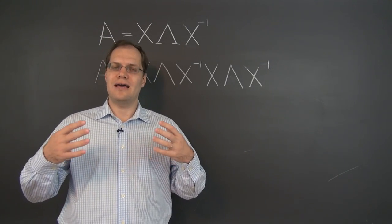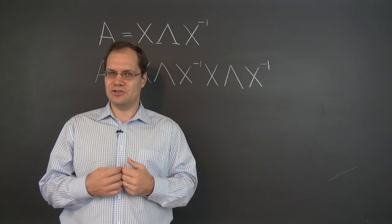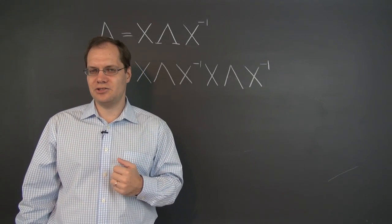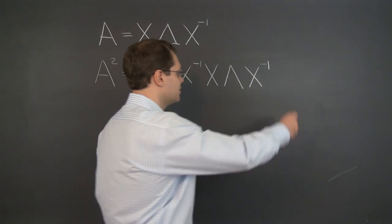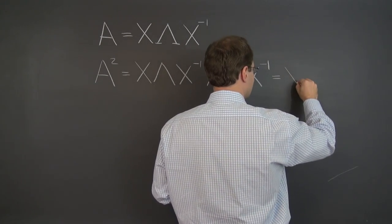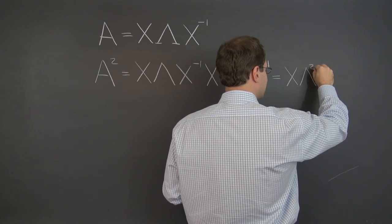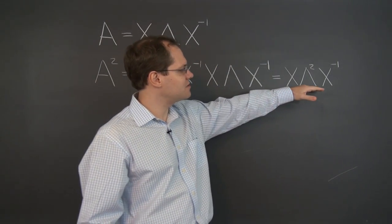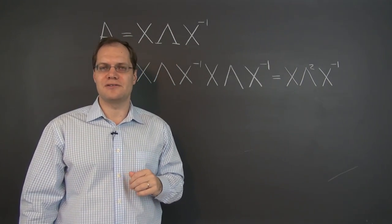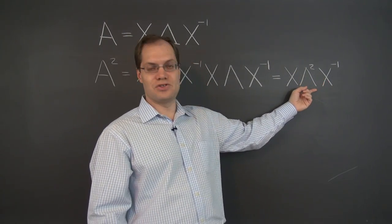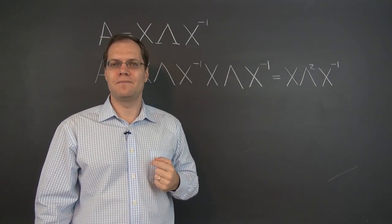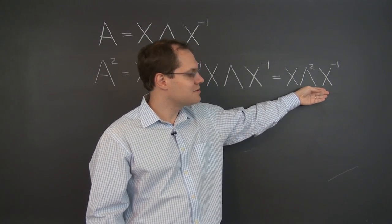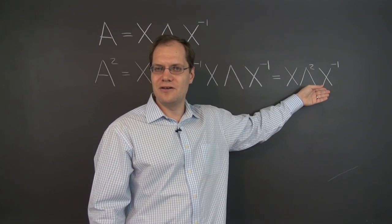Multiplying any two diagonal matrices amounts to multiplying their diagonal entries together. In the case of squaring a diagonal matrix, you just have to square each one of its diagonal entries. Nothing could be simpler, very quick and efficient. So the whole thing becomes X lambda squared X inverse. Let me make sure it fit on the board. It fit perfectly. Now from this expression we can draw a plethora of conclusions. First of all, we notice that A squared has the same eigenvectors as A, and its eigenvalues are the squares of the eigenvalues of A.